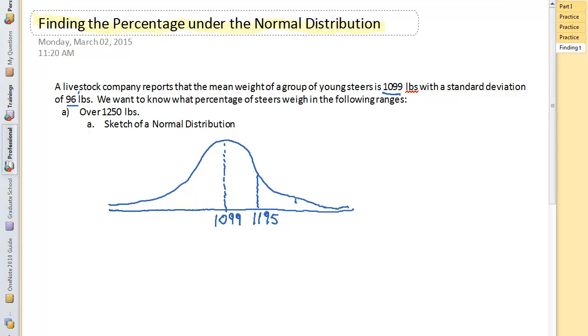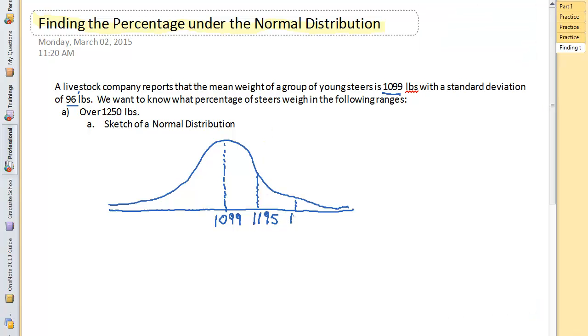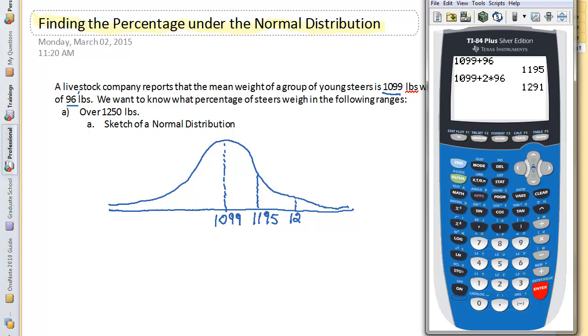Then I'm going to go out one more standard deviation, because I would like to actually get past 1250. So that's 1099 plus 2 times 96, and that's 1,291.